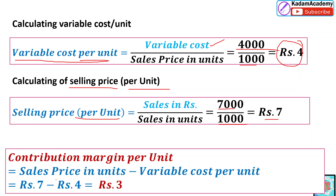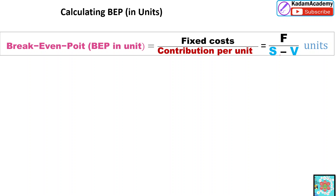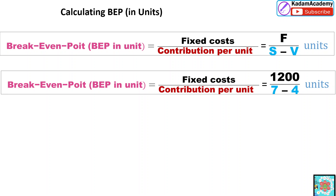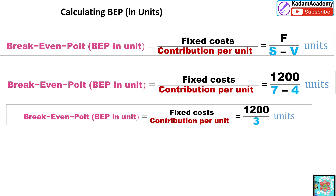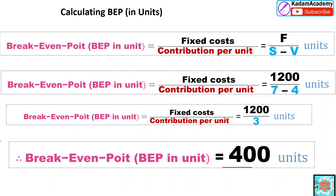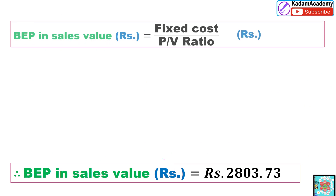Now we calculate the contribution margin per unit: selling price per unit minus variable cost per unit = 7 − 4 = 3 rupees. Once we have the contribution margin per unit and the fixed cost already given, we calculate BEP in units = Fixed Cost / (S − V) = 1,200 / (7 − 4) = 1,200 / 3 = 400 units. This is the first answer.